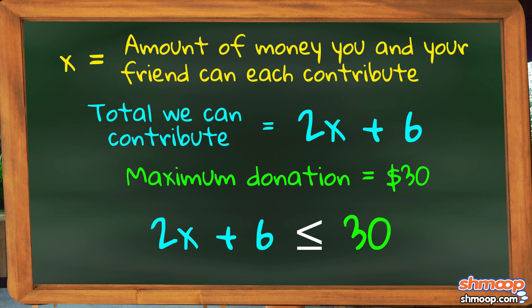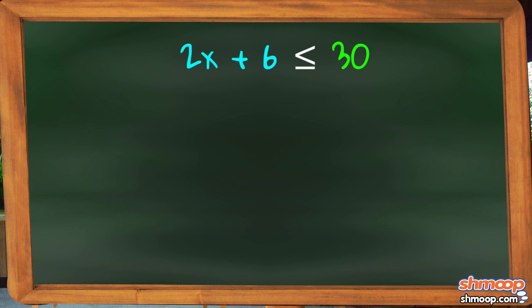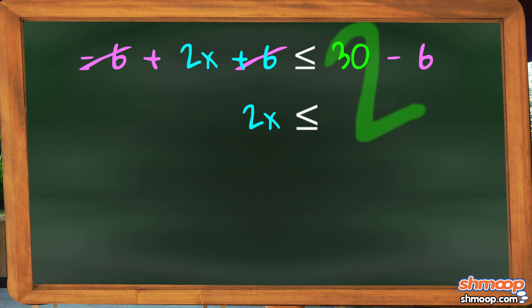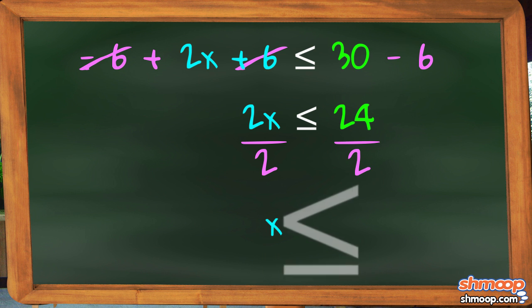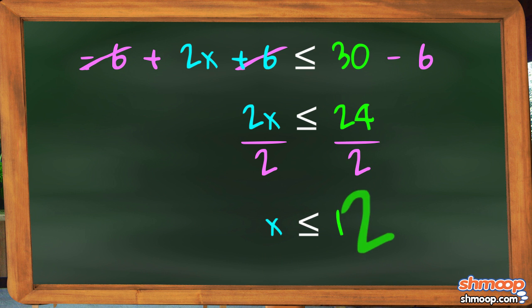Now to solve this pressing issue. First, we'll subtract 6 from each side. That leaves us with 2X is less than or equal to $24. Now we need to divide both sides by 2. That gives us X is less than or equal to $12.